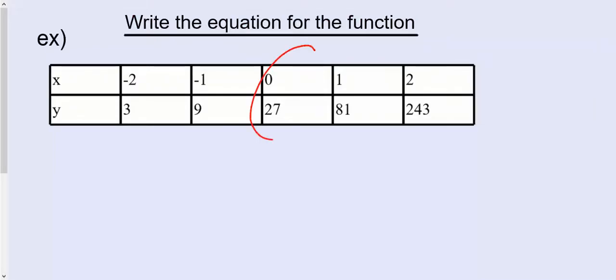So this one here, we're starting at 27. So y equals 27. And this one is tripling every time, so times 3. So they're really easy to write the equation as long as you kind of know what a and b represent.